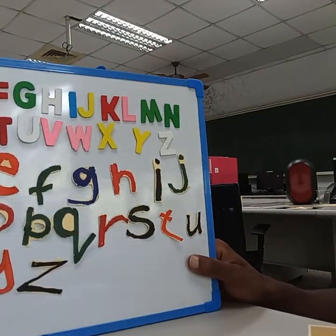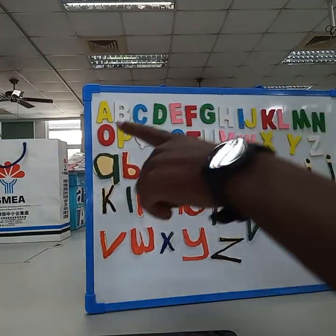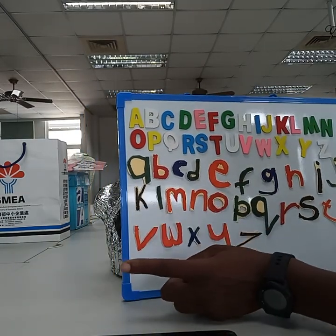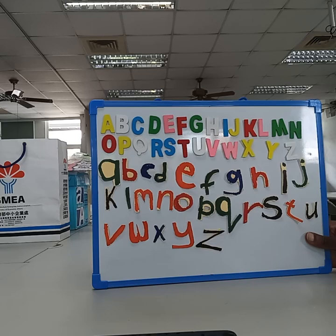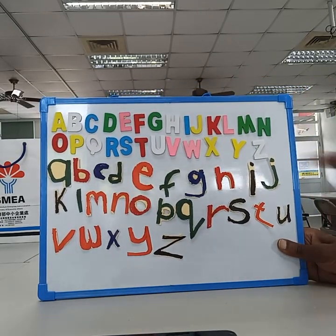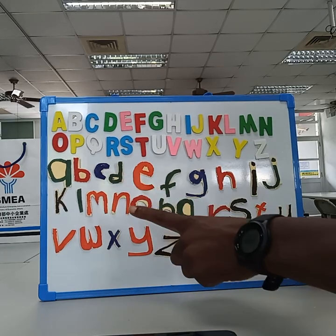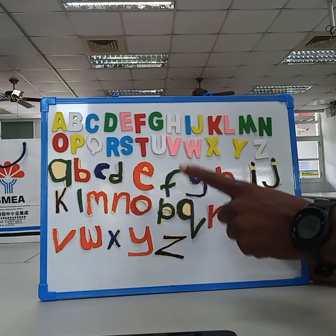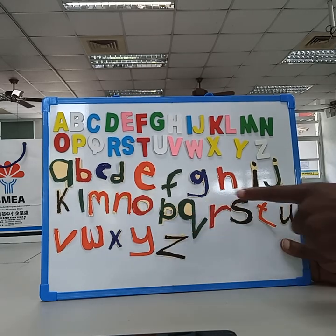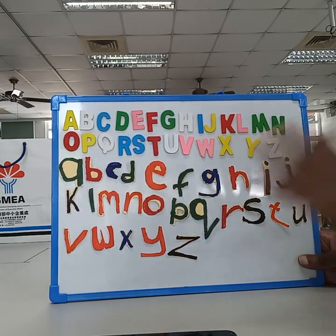Now we are still busy with the alphabets. We said these are big alphabets and these are small alphabets. The small alphabets, they start from — let me just see if everything shows in the camera. Yeah, it shows. So they start from A, B, C, D, E, F, G, H, I, J, K, L, M, N, O, P, Q, R, S, T, U, V, W, X, Y, Z. So those are the small alphabets.